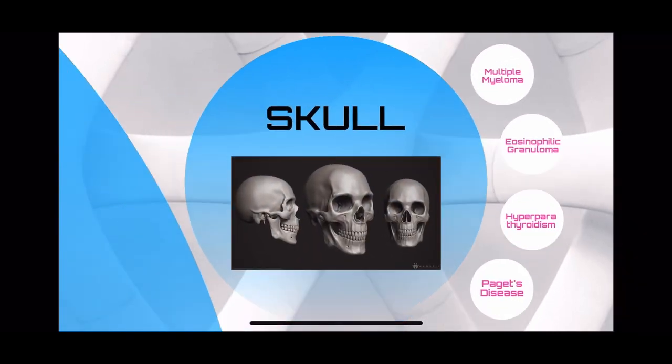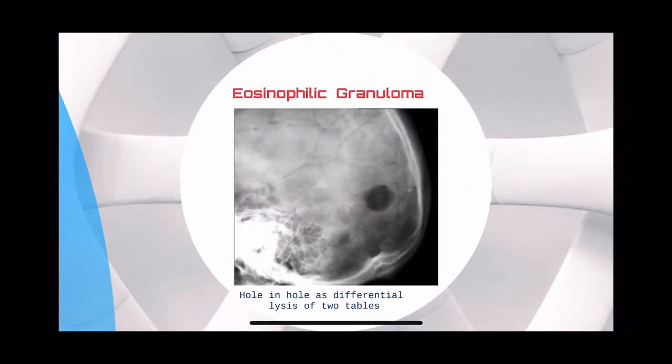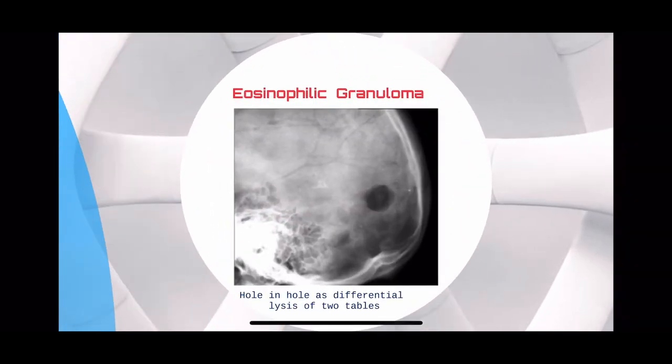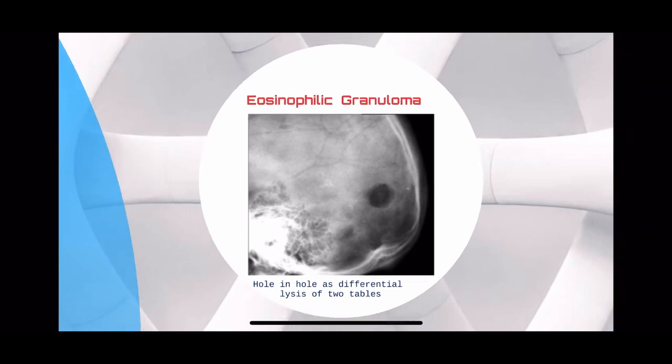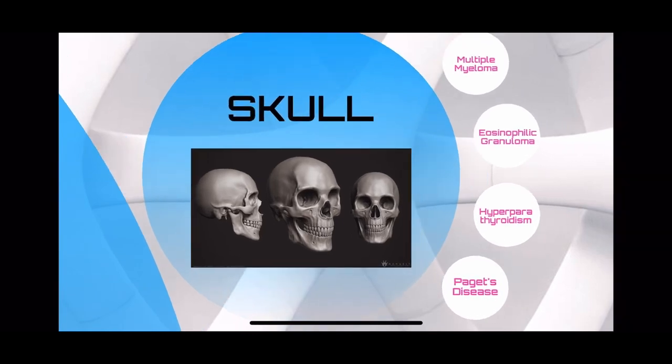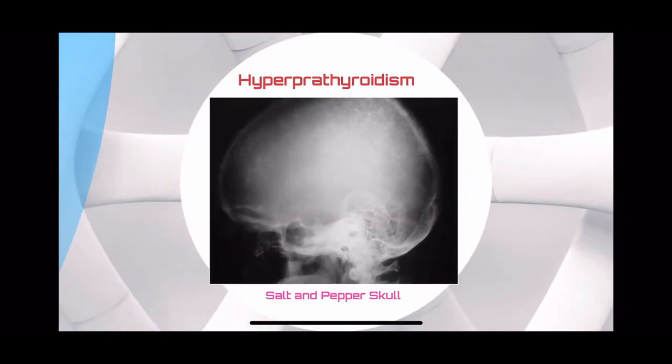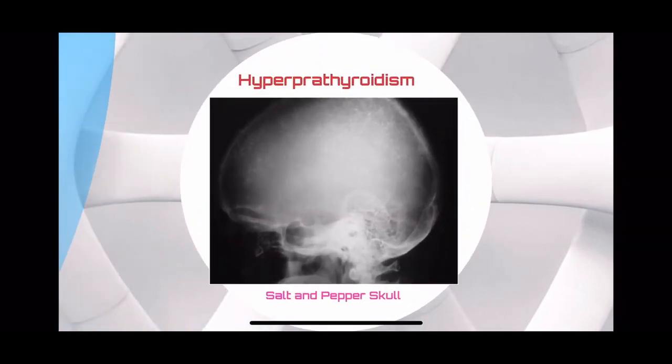In eosinophilic granuloma, you see a punched-out lesion inside which there is another lytic lesion, so it's called the hole-in-hole sign. In hyperparathyroidism, there are salt-like sclerotic areas spread with lytic pepper-like areas.